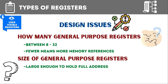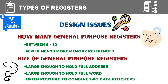The register should also be large enough to hold a full word, because when we read data from memory we read it in the form of words. It is often also possible to combine two data registers to form a single register. For example, the AX register can be divided into AL, representing the first 8 bits, and AH, representing the second 8 bits. So we can combine two data registers to form a single register.